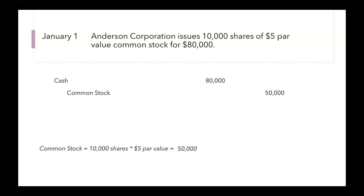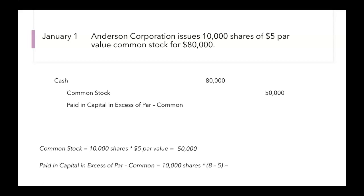You'll notice your debits and credits don't equal. That's because we issued these shares at $8 a piece but the par value was only $5. So we have paid-in capital in excess of par. We could just take $80,000 minus $50,000, since your debits and credits have to equal. But more precisely, we take our number of shares times the difference between the market price and our par value — $8 minus $5 — so $10,000 times $3 gives us $30,000.